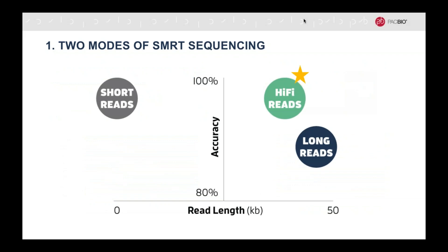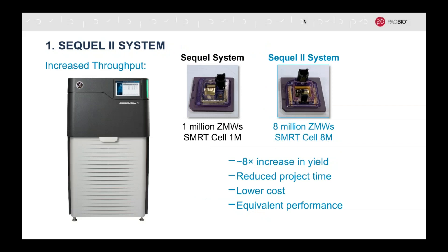Recently, innovations in sequencing chemistry have enabled the widespread use of a second mode called circular consensus sequencing, or CCS. Through the circular topology of the SMARTbell template molecule, it is possible with PacBio to sequence both strands of a double-stranded DNA molecule multiple times, allowing for intramolecular consensus and leading to highly accurate long reads, which we call HiFi reads.